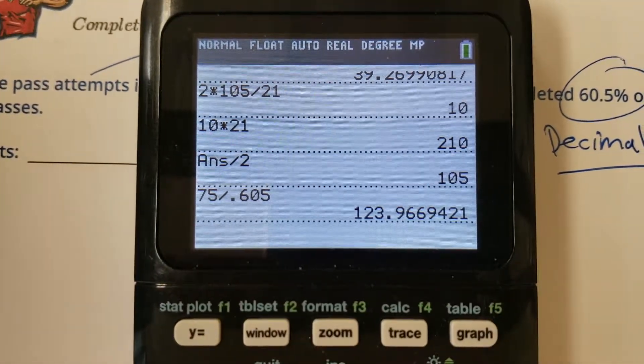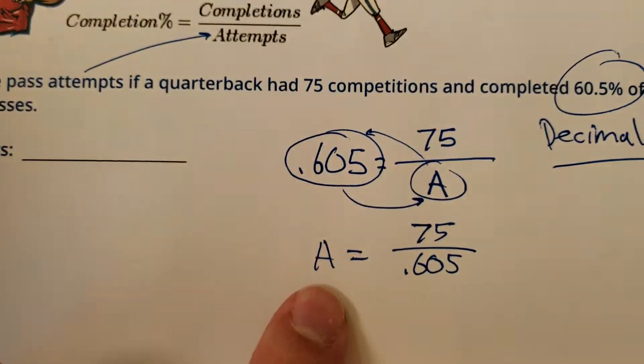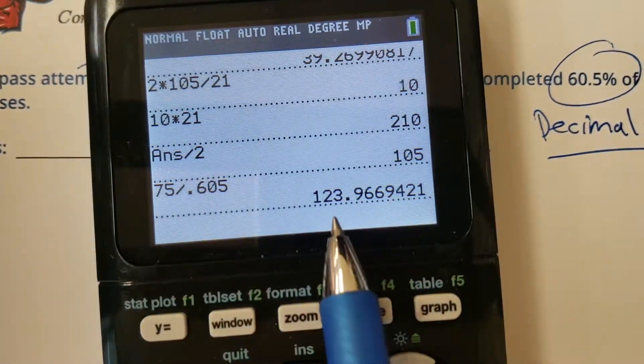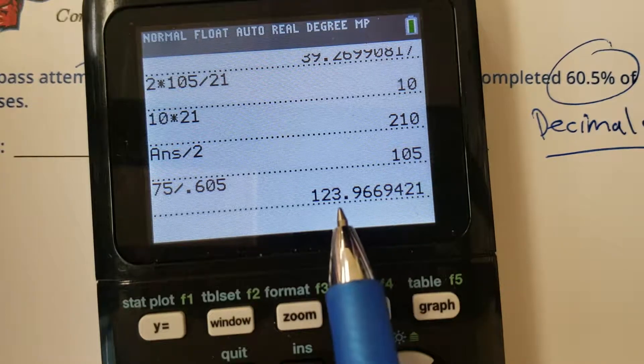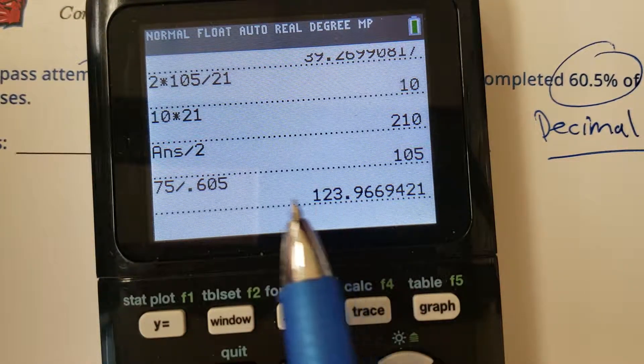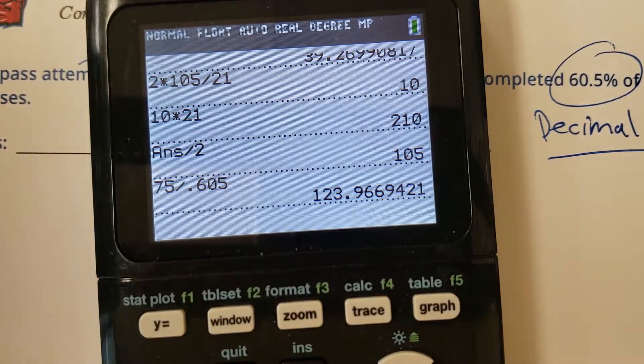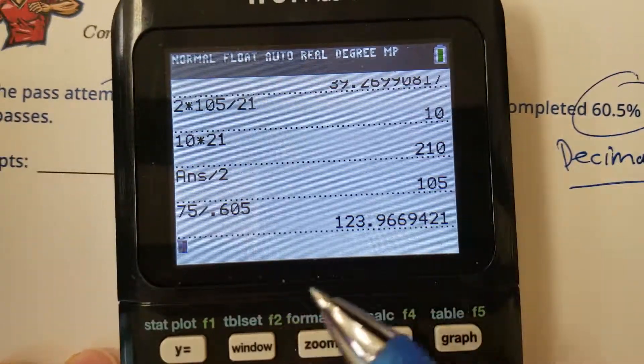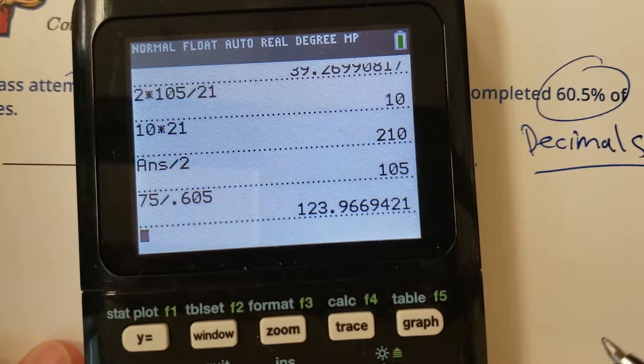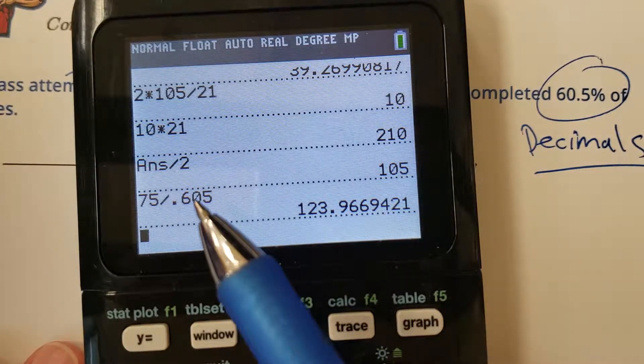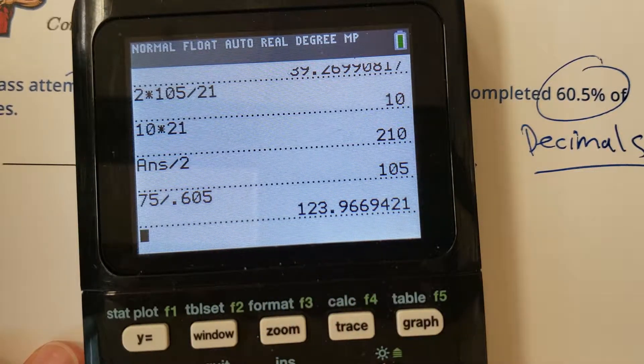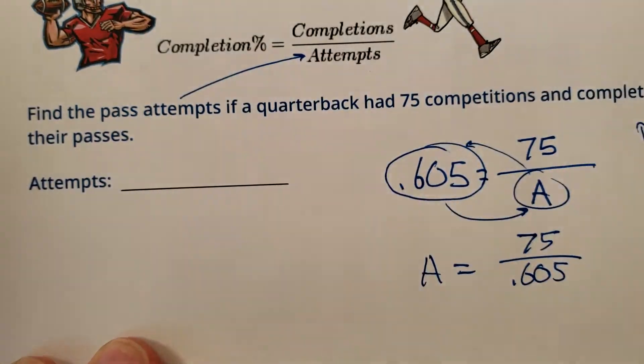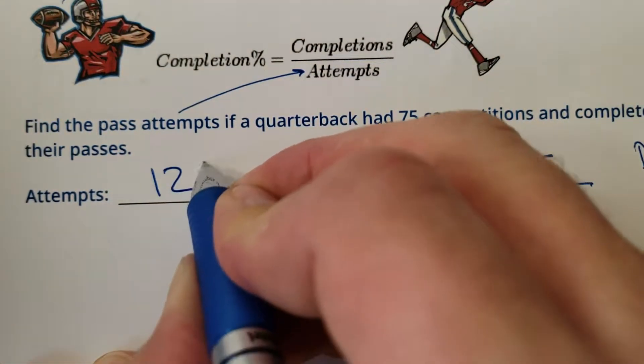Now, if you were going to round that to a whole attempt, how many attempts do you think that quarterback made? I'm going to say 124. It's really close to 124. So decimals and percents don't always work out perfectly because not all numbers are divisible and make nice numbers. So I'm guessing this 60.5% was rounded. I'm guessing they had 124 attempts.